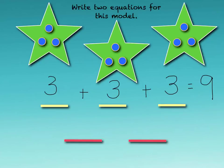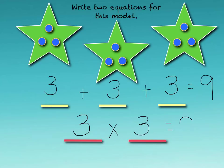Or I can use multiplication. How many groups do I have? I have three groups of three circles in each group, and that gives me a total of nine circles. My factors and my product: factor is three, factor is three, my product is nine. So I've just created two equations for this — a repeated addition and a multiplication.